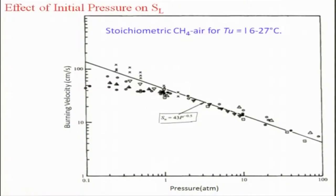Keep in mind that this is for stoichiometric methane-air. The unburned temperature varies from 16 to 20 degrees Celsius because experiments are conducted in various environments — this is in western countries, so it is a low temperature. This indicates that burning velocity decreases with increase in pressure. In some situations it may remain constant, and in some it may also increase, but that depends on the range of burning velocity — or rather, it will be dependent on the order of the reaction.